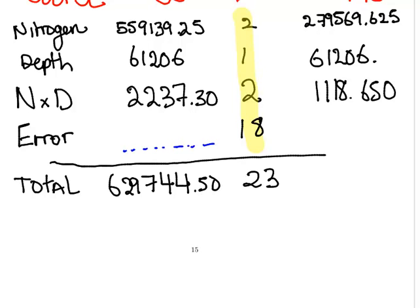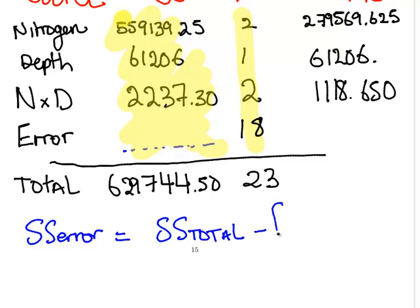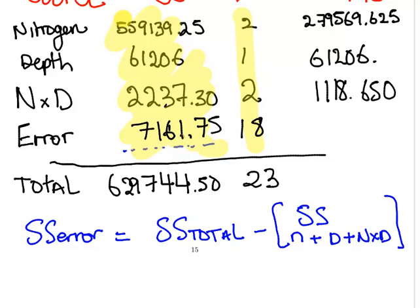What goes in here such that the sum of this column would give you 629744.5? This is a little bit of calculator work. It is essentially sums of squares total. Sums of squares error is sums of squares total minus sums of squares for nitrogen plus depth plus nitrogen by depth. It is essentially the difference. The value, just if you work it out in your calculator, you should get 7161.75. Divide that by 18, and what do you get? 398.875.